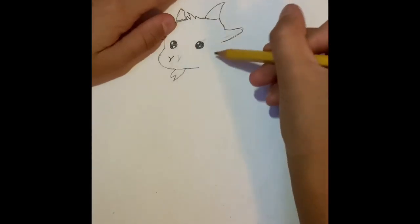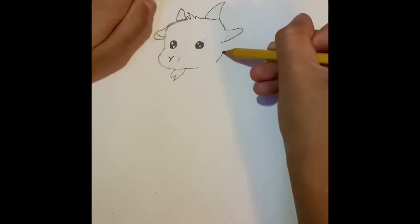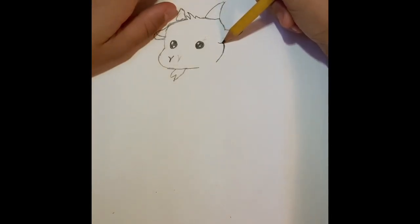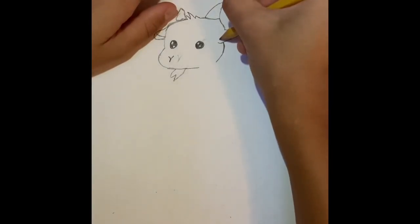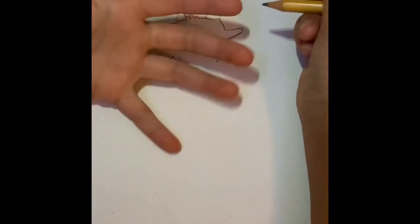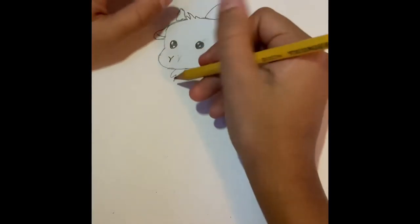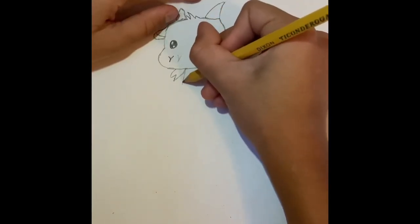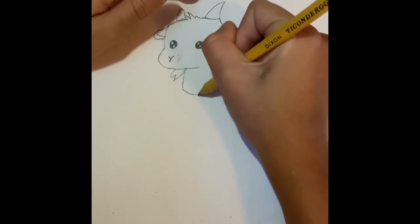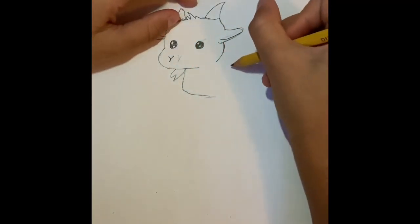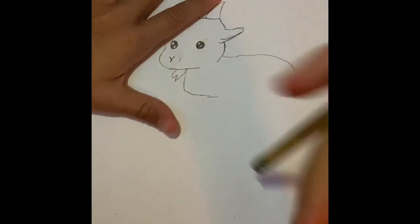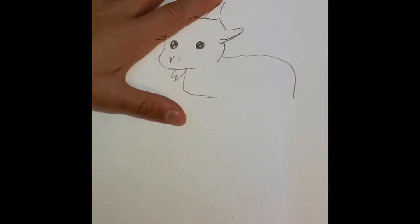And then we're going to need to connect these almost. Don't connect them, though. And here we're going to need to draw a little fly. And then from right here, about, we're going to draw his little chest. And then his back. His chest can be a little bit longer.